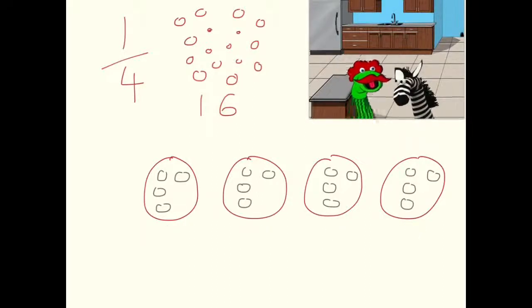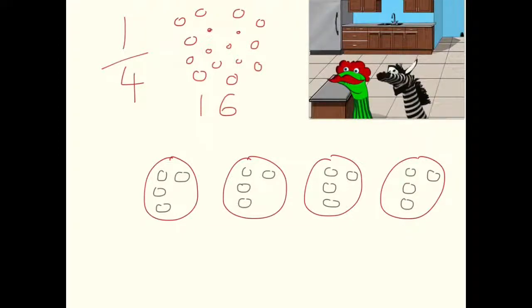How many of these four equal groups do we need? Well, the numerator is one. So, we only need one group. And in that group, we have got four sweets. So, what is one quarter of 16 sweets? Four.